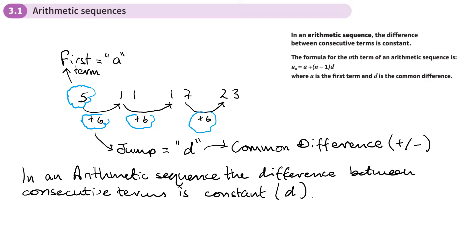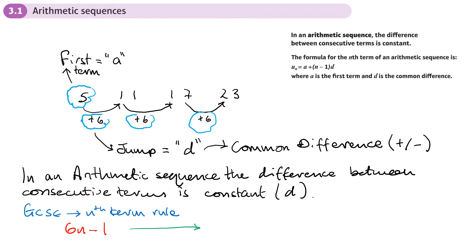You'll remember the nth term rule from GCSE — we have something very similar, just using different notation. From GCSE, we talked about the nth term rule. For the sequence 5, 11, 17, 23, the first term is 5 and it goes up in sixes, so the nth term would be 6n minus 1. At A-level we use a slightly different notation: the general formula is un = a + (n − 1)d.